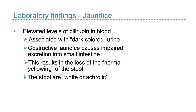Both conjugated and unconjugated bilirubin accumulate in the blood, causing jaundice. Some of the water-soluble conjugated bilirubin is filtered into the urine, giving it a dark colour. Another common finding is increased urobilinogen in the urine. Urobilinogen is produced when bilirubin is reduced in the gut by intestinal microbes. Normally most is reabsorbed and returned to the liver, but if liver cells aren't functioning properly, urobilinogen is redirected to the kidneys and excreted.